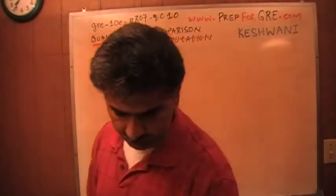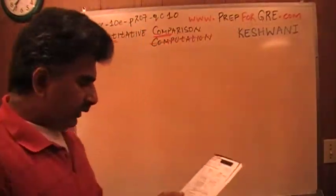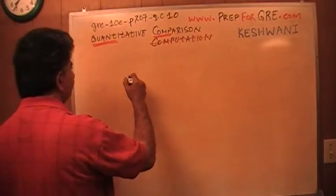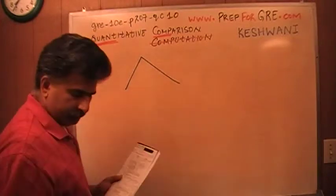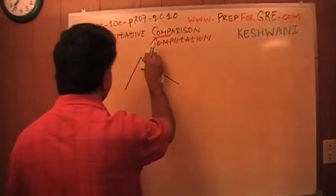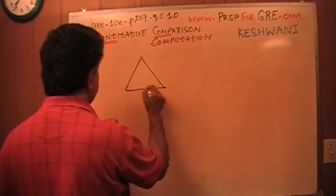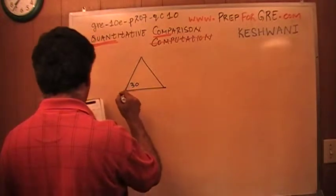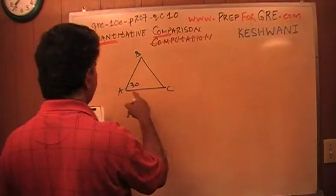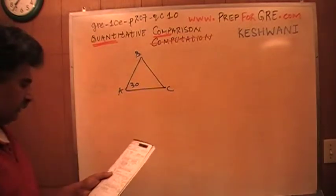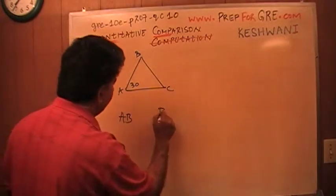All right, number 10. Let's take a look at it, see what it has to say. They give you a triangle where they tell you that this angle is 30. They tell you that the angle A is 30 and they want you to compare the length of AB, this AB versus BC.